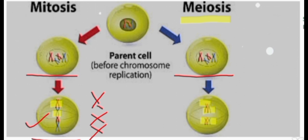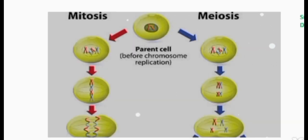But in meiosis, chromosomal pairs are arranged at the metaphase plate in the form of homologous chromosomes. Homologous chromosomes are those which are not exactly identical but are similar. These chromosomes are in the form of pairs and they are aligned, and crossing over also occurs in meiosis, but in mitosis there is no crossing over.